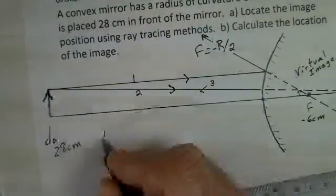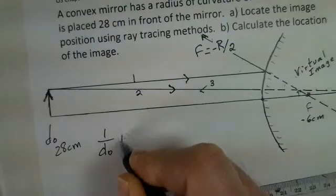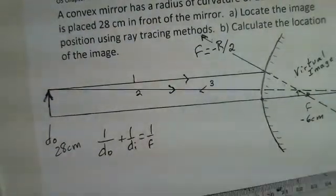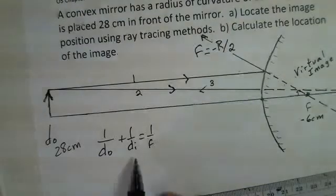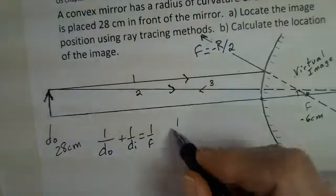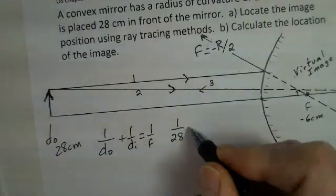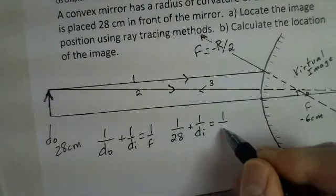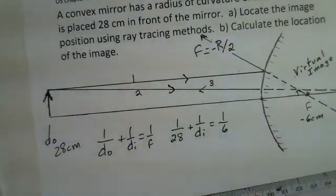Again, we are using 1/do + 1/di = 1/f. And we have two of these numbers. We will take di as the unknown. So 1/28 + 1/di = 1/6. Do you think that is correct?